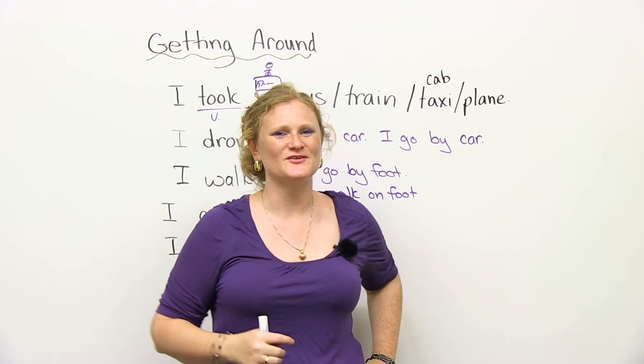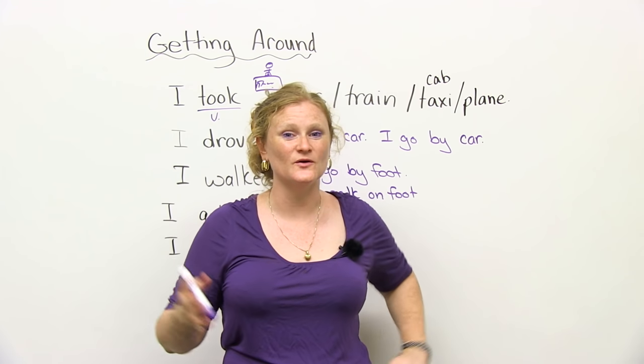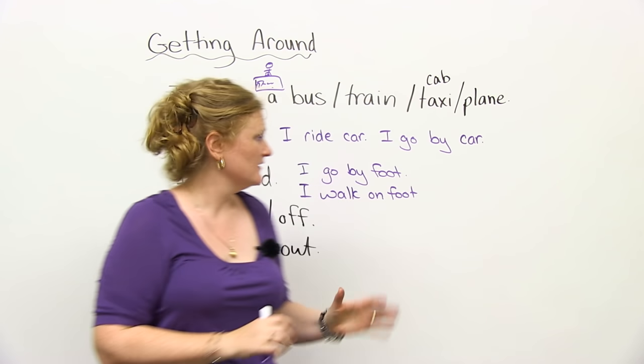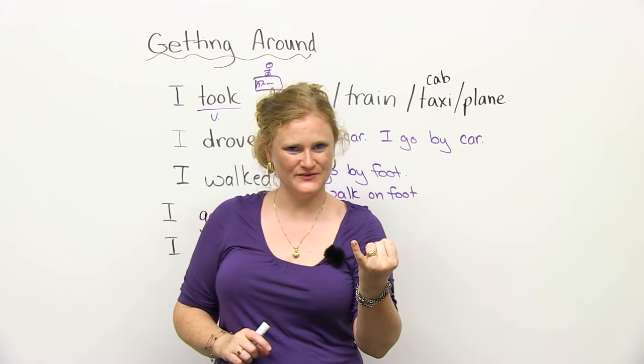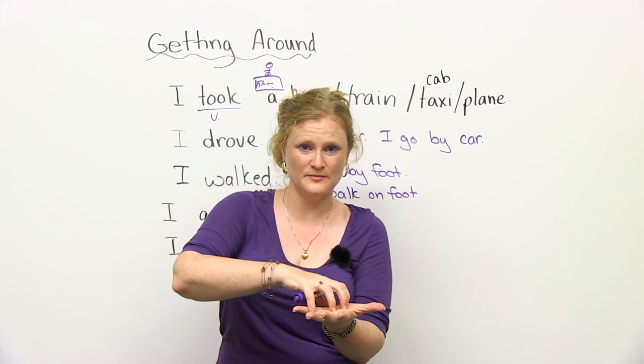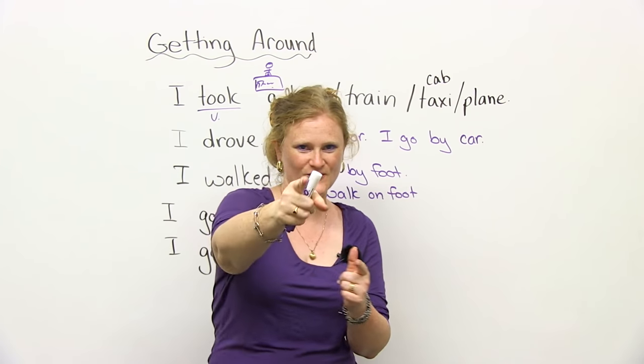I can ride a bicycle. So ride literally means you're on top of something. Tell me what you can ride. You can ride a bicycle, a motorcycle, a scooter, a moped. If you're on top of it, you're riding it. A horse.